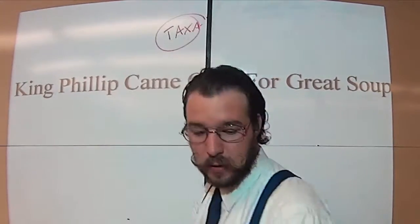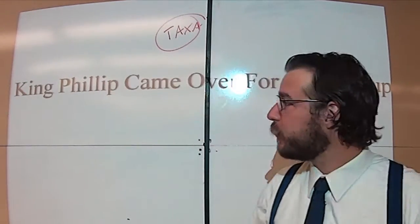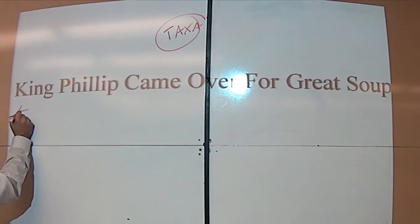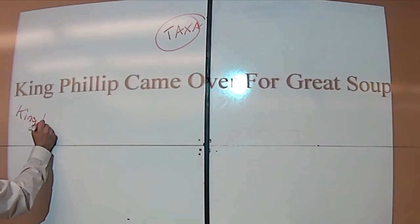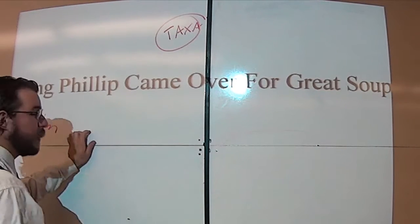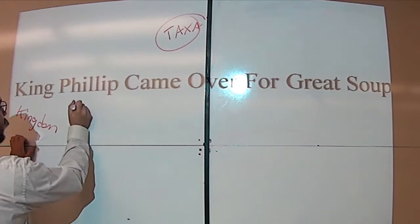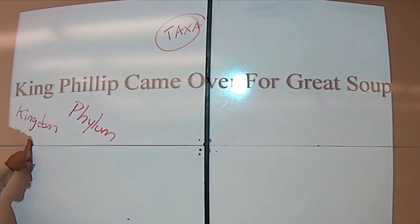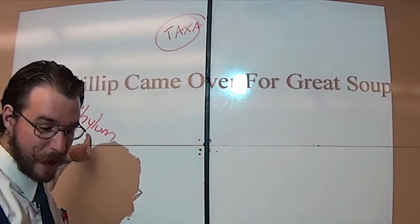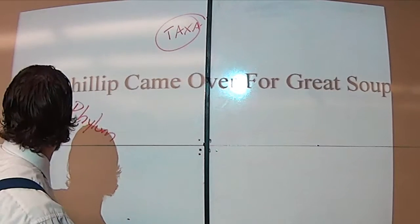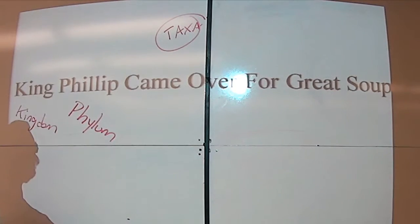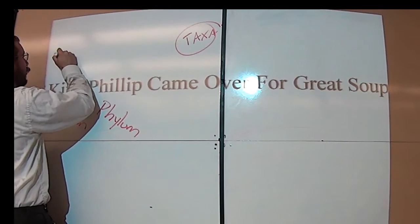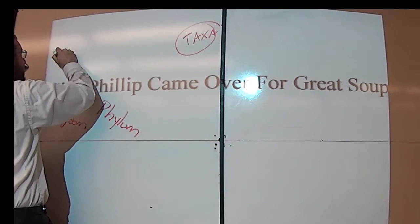Taxa is just a word for classification level. King is obviously for kingdom. Philip is for phylum — every kingdom can be broken down into many different phyla. You can think of these the same way that you think about a region of the world, like a hemisphere broken down into different countries.